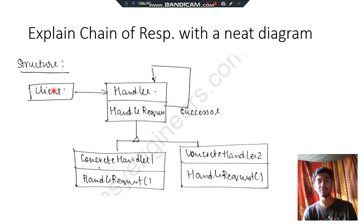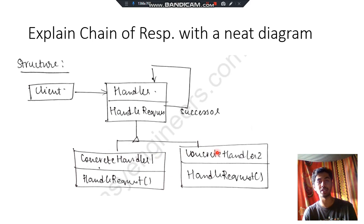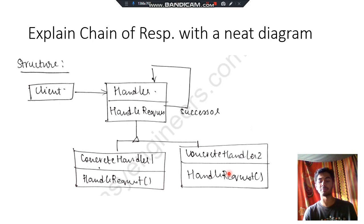The structure is as follows: you have to draw the Client first, and then you will have the Handler with the HandleRequest operation and a Successor reference. Draw an arrow like that. Then you have two more things: ConcreteHandler1 and ConcreteHandler2 — both of these have calls to the HandleRequest function.